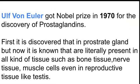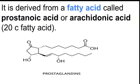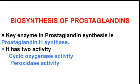Prostaglandins are present in tissues such as bone tissue, nerve tissue, muscle cells, and even in reproductive tissues like testes. They are derived from a fatty acid called prostanoic acid, or arachidonic acid, which is a 20-carbon fatty acid.